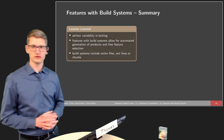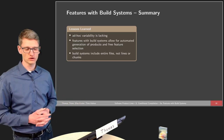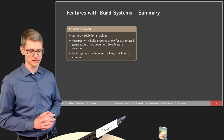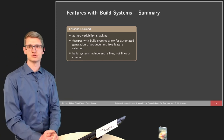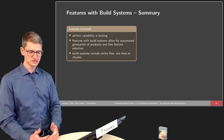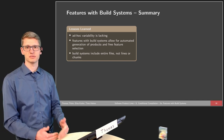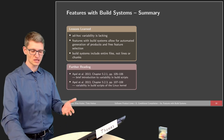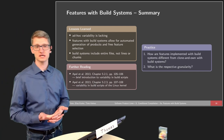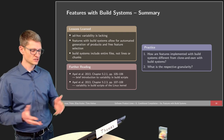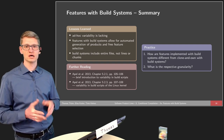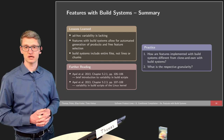In this part of the lecture, we looked at ad hoc variability, its problems, and why it does not fulfill our vision of a product line with features and compile-time variability. We also looked at build systems and how they can be used to automatically generate products based on free feature selections. But these build systems include entire files or subsystems — not individual lines or chunks. There is further reading in the book by Sven Apel and others. The practical task: how are features implemented with build systems, and how is this different from clone and own with build systems as discussed in lecture three?